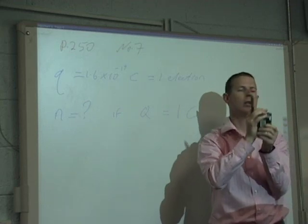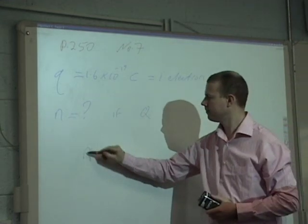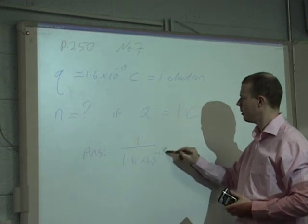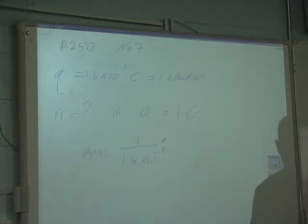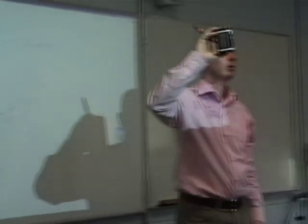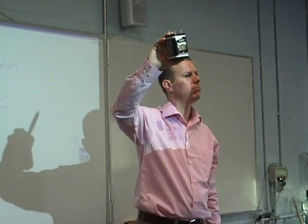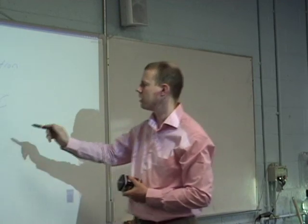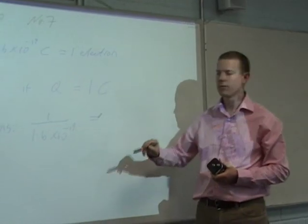How many of these do you need to make up 1 Coulomb? 1 divided by 1.6×10⁻¹⁹. I'll give an analogy: if this took up 1 cubic meter and the room was 1,000 cubic meters, how many of these would make up a room? 1,000 divided by whatever is in one of these. It's the same thing. What is 1 divided by 1.6×10⁻¹⁹? The answer is 6.25×10¹⁸.